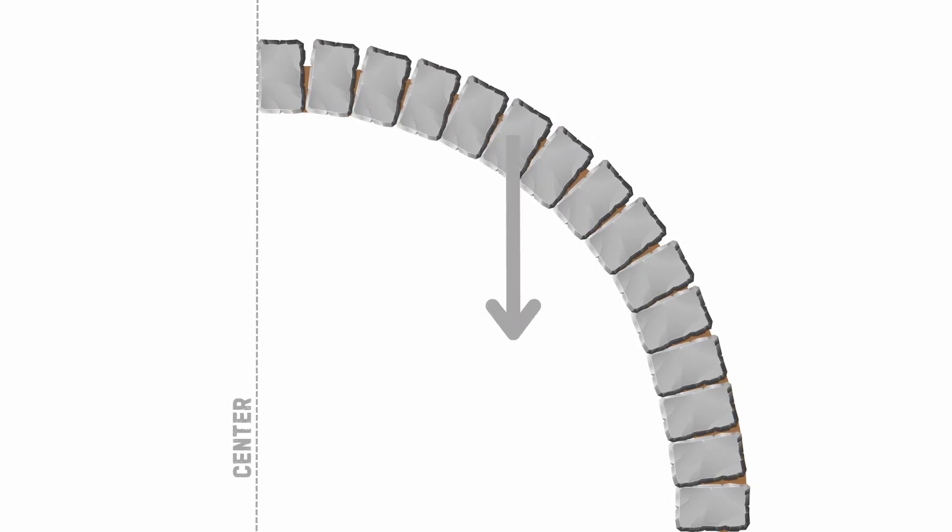On each stone element we have a vertical weight force acting downwards, which can be broken down into the two vertices relevant to the orientation of each stone element.